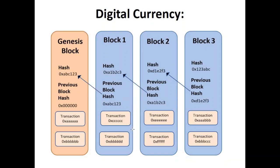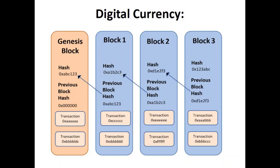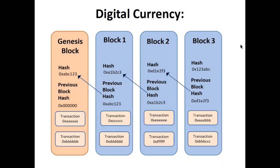If a hacker tries to alter a transaction on a block — for example, redirecting money to their own account instead of the intended recipient — they would have to change the transaction details. Doing so changes that block's hash value, which means all subsequent blocks can no longer link to it, because they are looking for the original hash value to connect to. As a result, the entire chain after that point would be lost, preventing the hacker from achieving their goal.